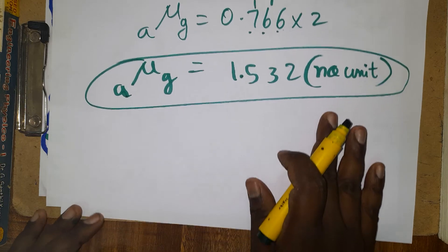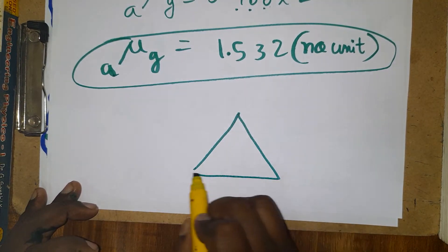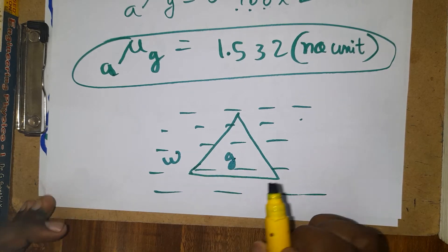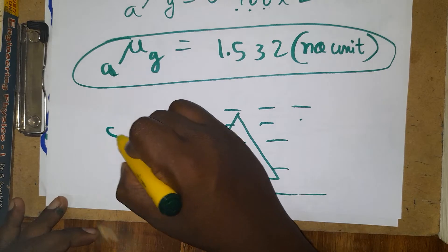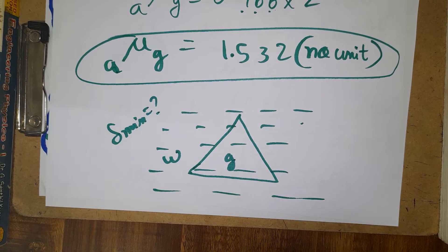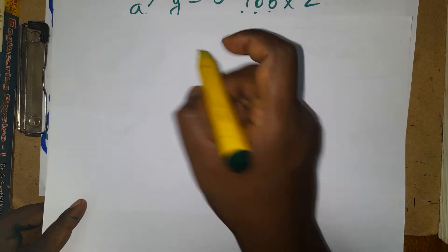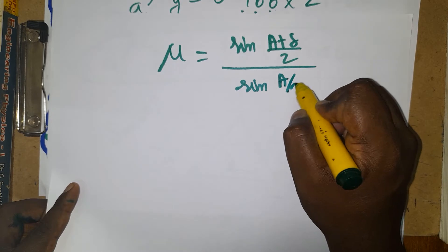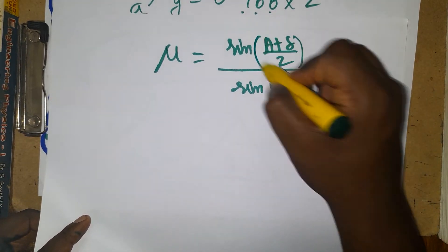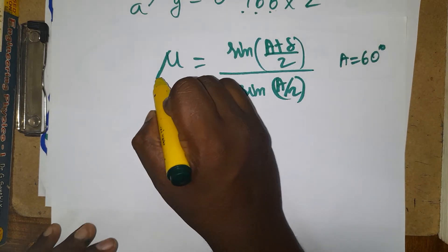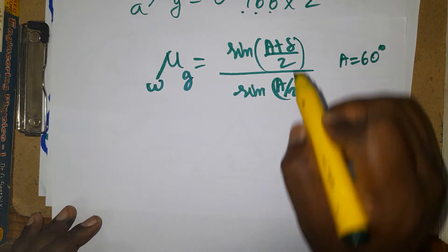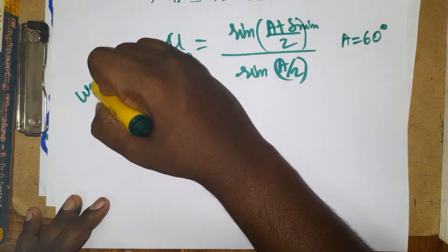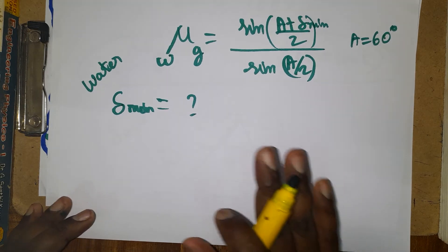Now for the second part: the prism is placed inside water. When the prism is in water, light is traveling from water to glass. We want to find the new minimum deviation in this situation. We will use the same prism formula: μ = sin((A + δ)/2) divided by sin(A/2), with A = 60° constant but δ is now unknown.